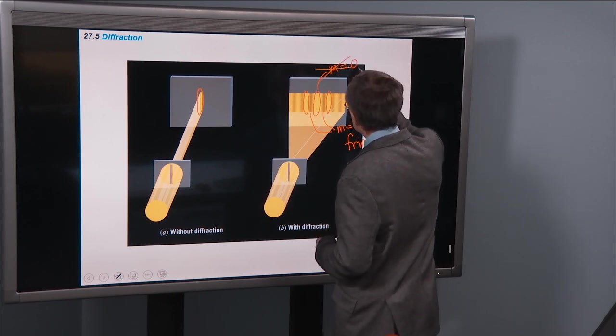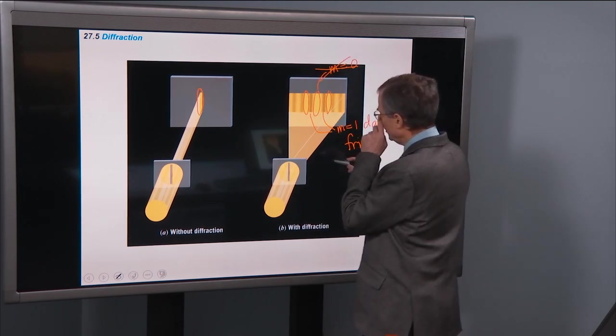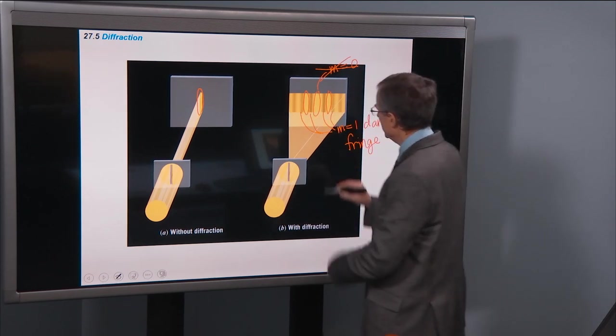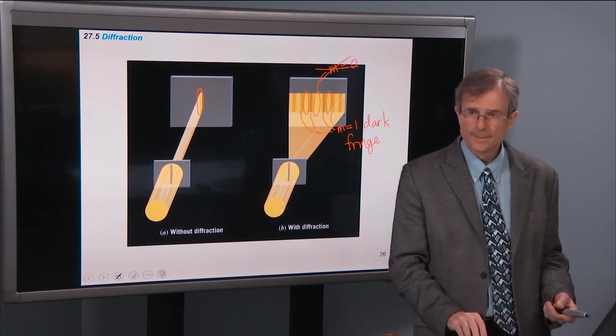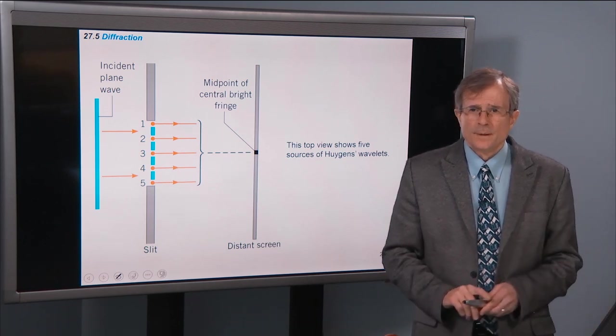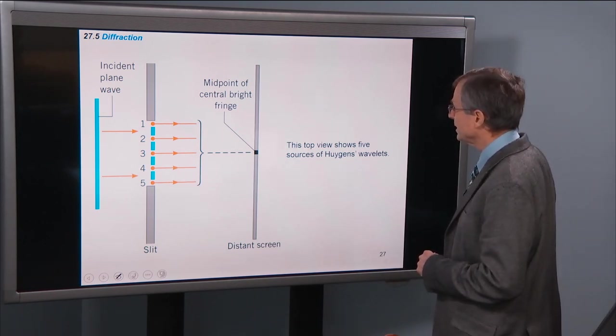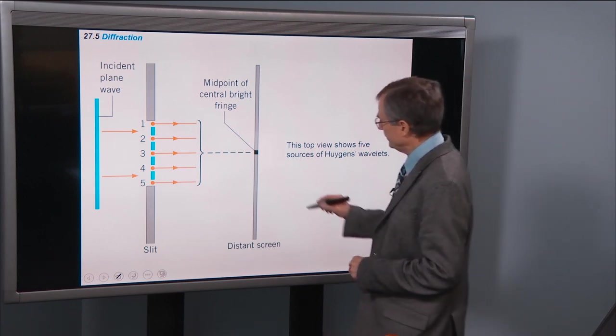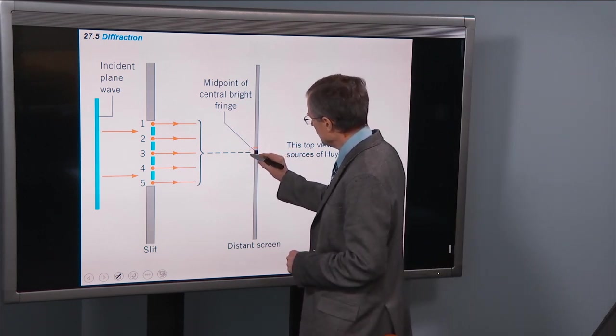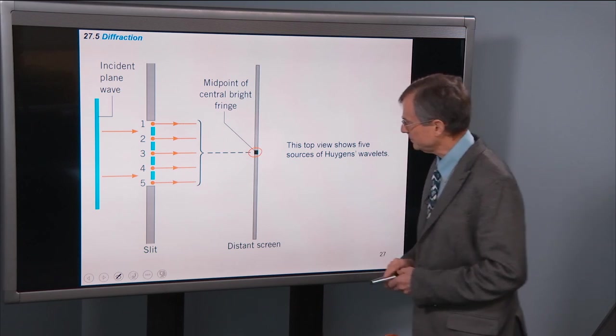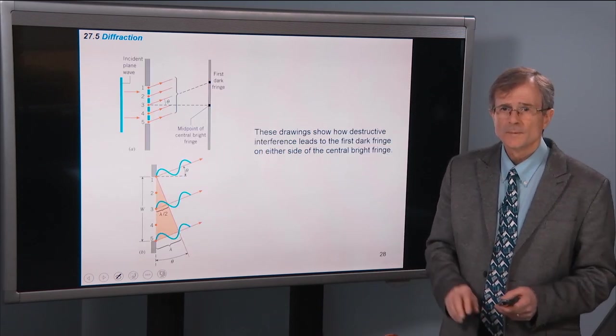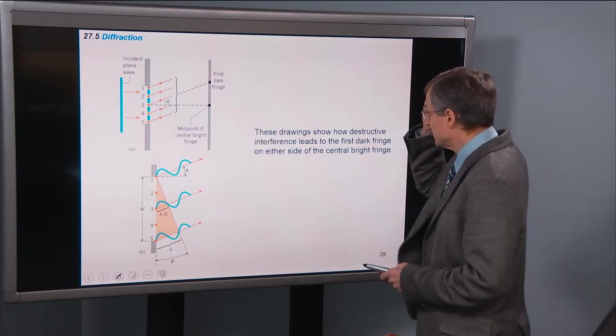But let's not worry about that. Let's think about the locations of these dark fringes, these guys here. All right, five sources of Huygens' wavelets. This is the midpoint, the central bright fringe. The first dark fringe.